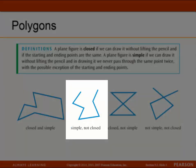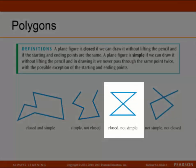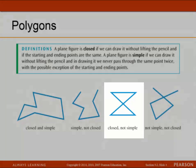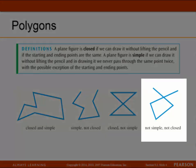The next figure is simple — there's no crossing over points — but it's not a closed figure. The third one is closed but not simple; right in the middle, we pass through that point twice. And then the last one is neither simple nor closed.